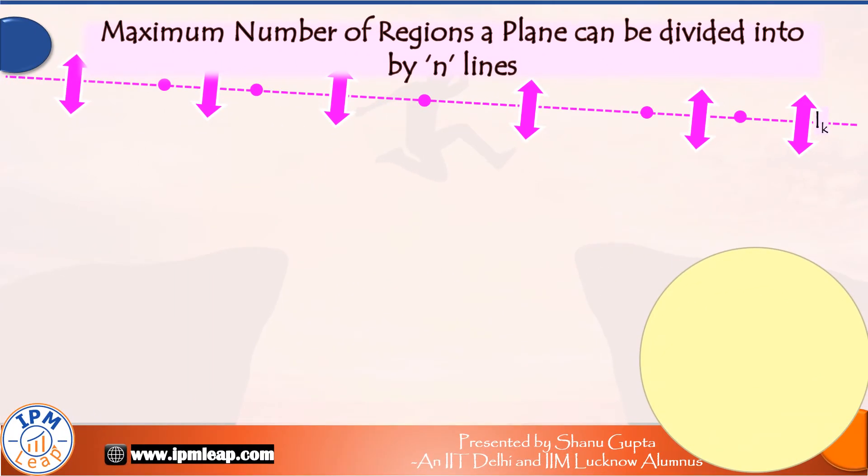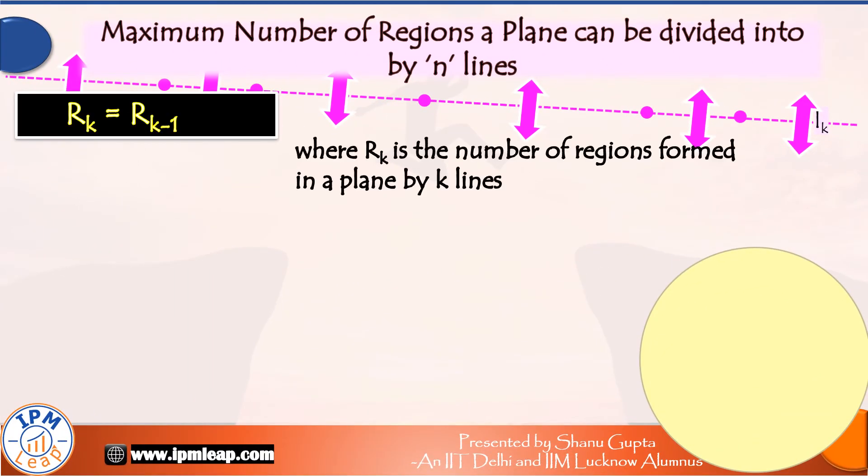So, let us derive a general formula for the best case scenario. Let us suppose RK is the number of regions formed in a plane by K lines. Since line number K increases K regions in a plane, we can say that RK minus RK-1, which is the number of regions at K-1 lines before the Kth line was drawn. This is equal to K.